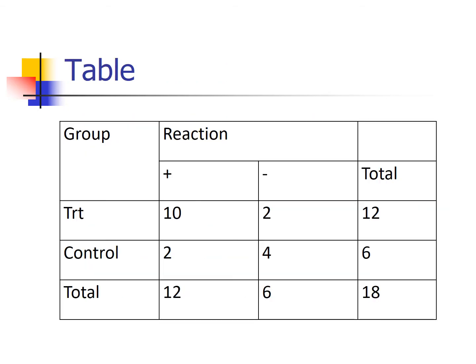Here's our table. I took the scenario described in the previous slide and put it here. Now, how could we analyze this? Up until now, we've talked about two chi-square tests: the Pearson chi-square test and the randomization chi-square test.